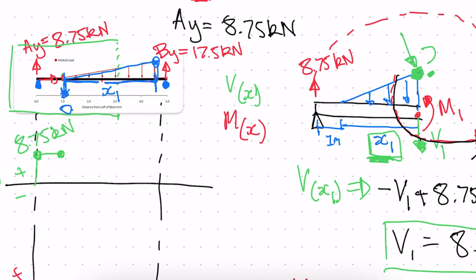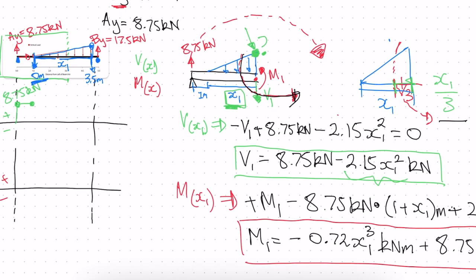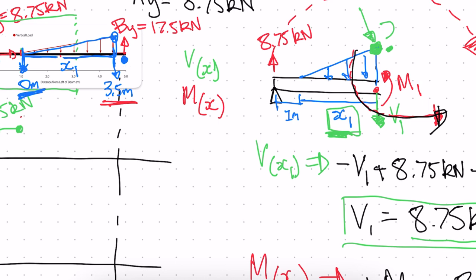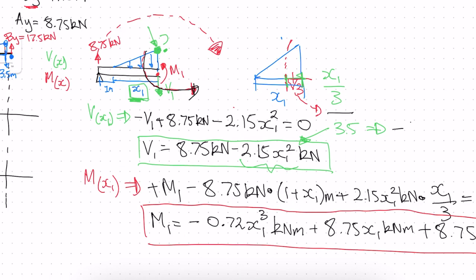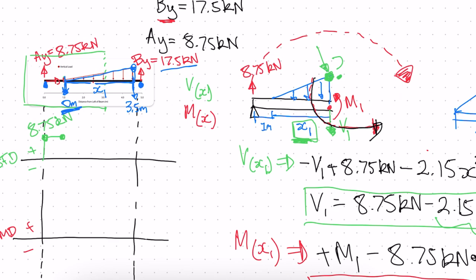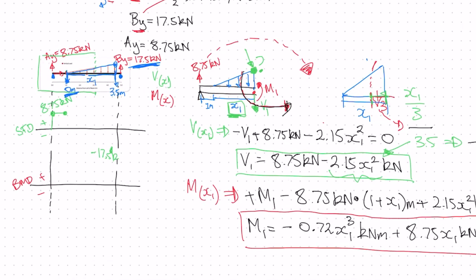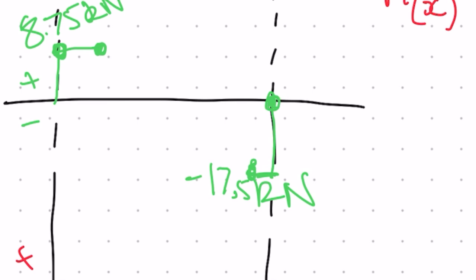For this section, x1 ranges from 0 to 3.5 meters. Plugging x1 = 0 into the shear equation gives 8.75 kilonewtons, which matches the known value on the diagram. Plugging x1 = 3.5 meters gives approximately negative 17.58 kilonewtons, very close to our reaction BY value of 17.5 kilonewtons — the small difference is due to rounding. So there is a point at roughly negative 17.5 kilonewtons, joined to 8.75 by a curve.